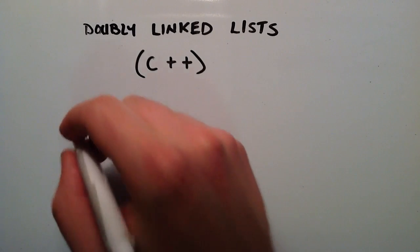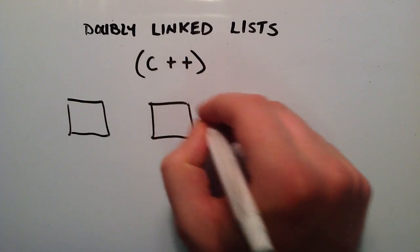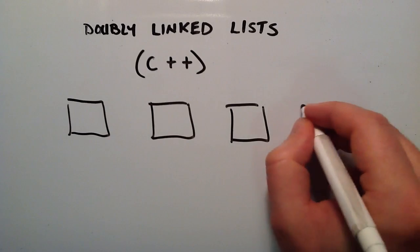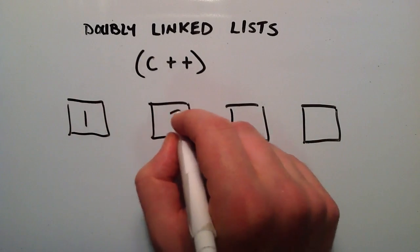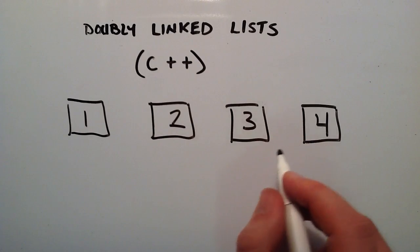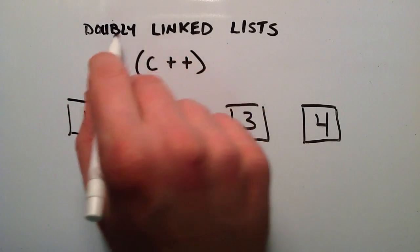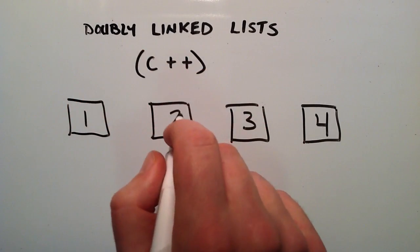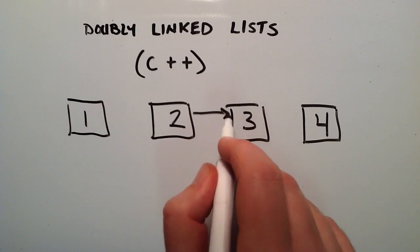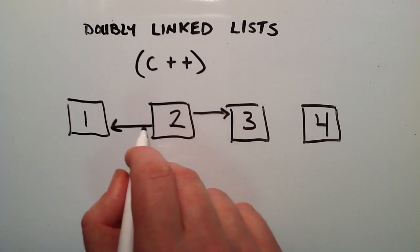A doubly linked list is a list that consists of a bunch of nodes. Each node has the ability to hold some data — for our case we're just going to put 1, 2, 3, and 4 as the data inside our list. It's doubly linked, meaning each node has the ability to link to both the next node and the previous node in the list. So it has two links — it's doubly linked.